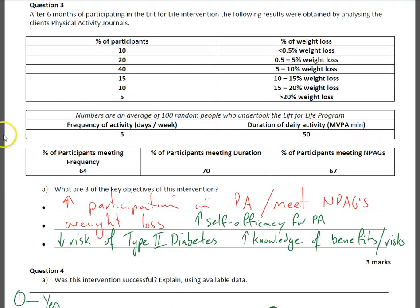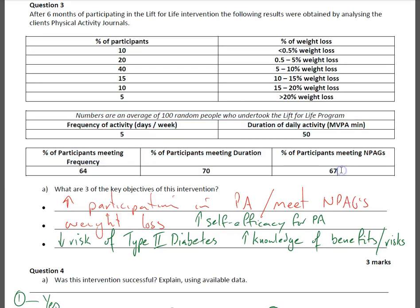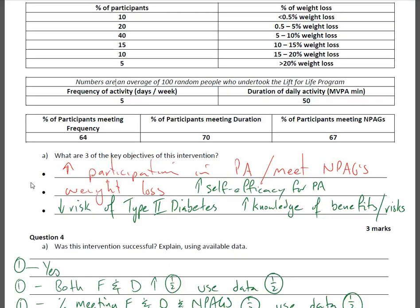Question 3 looks at the same questions as the pre-intervention survey but is now post-survey, examining the percentage of participants and weight loss. What are three key objectives of this intervention? Looking at the initial information: increased participation in physical activity, try to meet national physical activity guidelines, weight loss, increased self-efficacy for physical activity, decreased risk of type 2 diabetes, and increased knowledge of the benefits of physical activity and risks of inactivity.